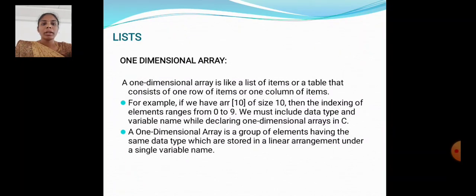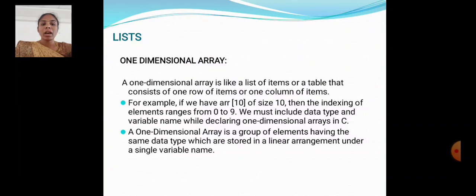A 1-Dimensional Array is like a list of items, or a table that consists of one row of items or one column of items. For example, if we have an array of size 10, then the index of elements ranges from 0 to 9. We must include the data type and variable name while declaring a 1-Dimensional Array in C. A 1-Dimensional Array is a group of elements having the same data type, stored in a linear arrangement under a single variable name.